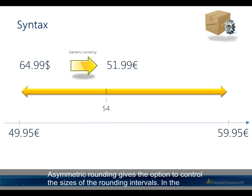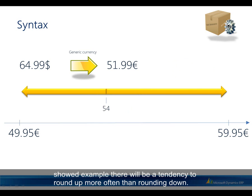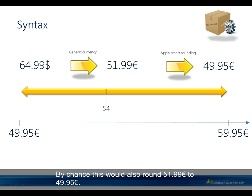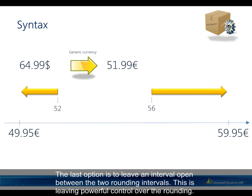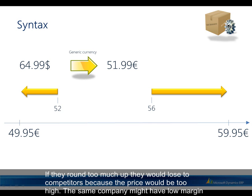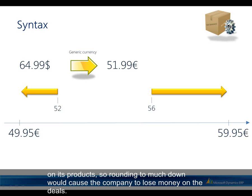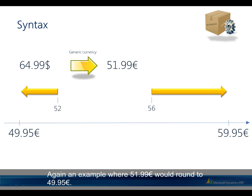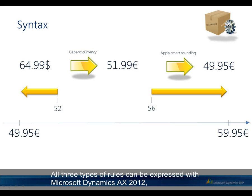Asymmetric rounding gives control over the sizes of the rounding intervals; in the shown example there is a tendency to round up more often than down — this would also round 51.99 to 49.95. The last option is to leave an interval open between the two rounding intervals, giving powerful control over rounding. This is useful in competitive markets where rounding too high loses customers, and rounding too low erodes margin. Again, 51.99 would round to 49.95. All three rule types can be expressed in Microsoft Dynamics AX 2012.